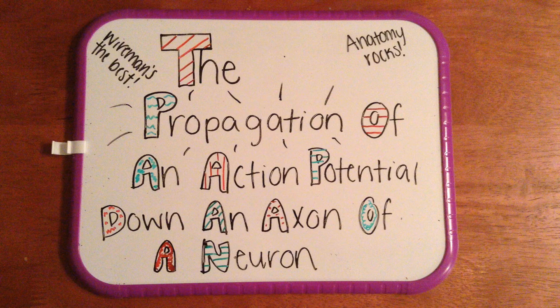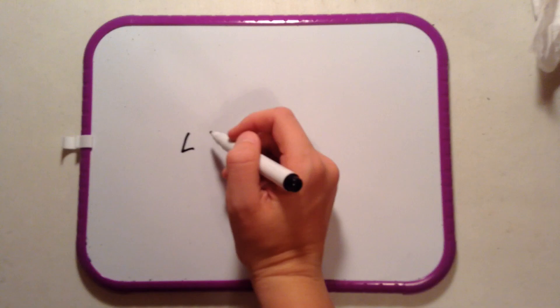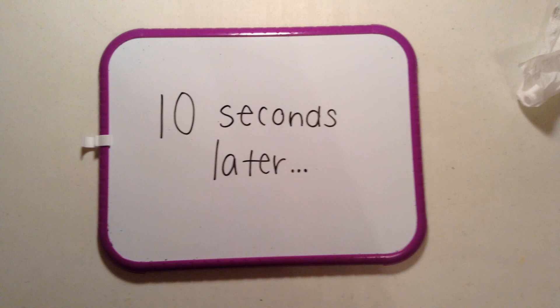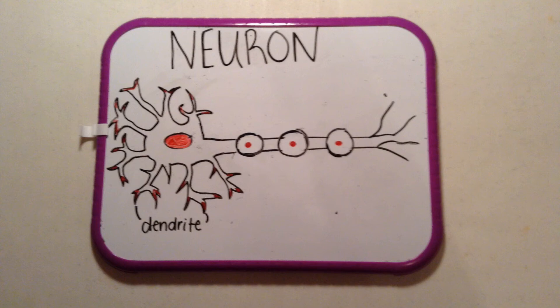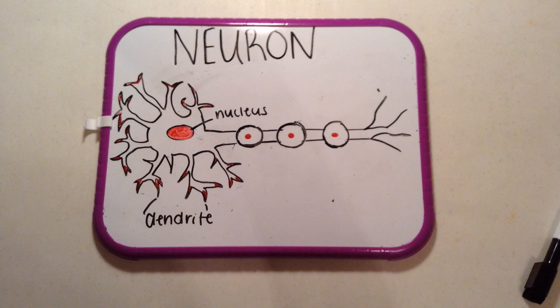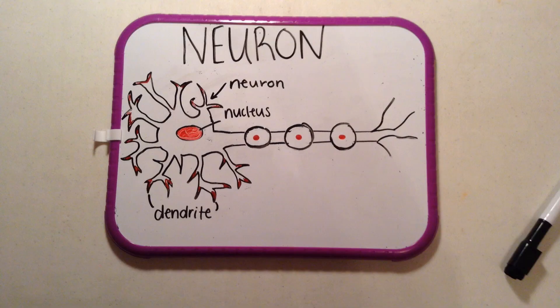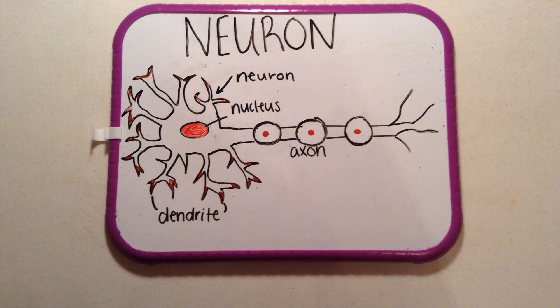The propagation of an action potential down an axon of a neuron. This is a neuron and this is an axon. A neuron transmits nerve impulses across an axon, and an axon is a long thread-like part of a nerve cell by which impulses are conducted.